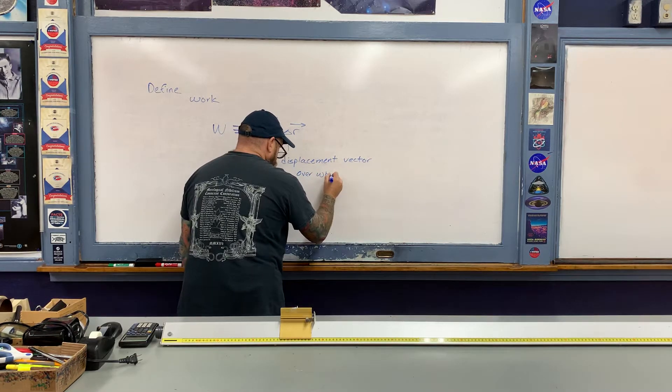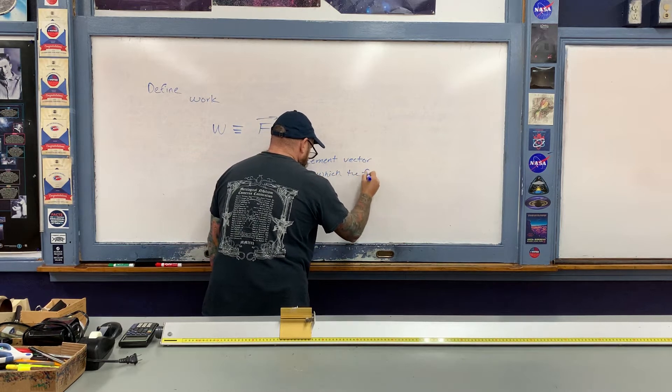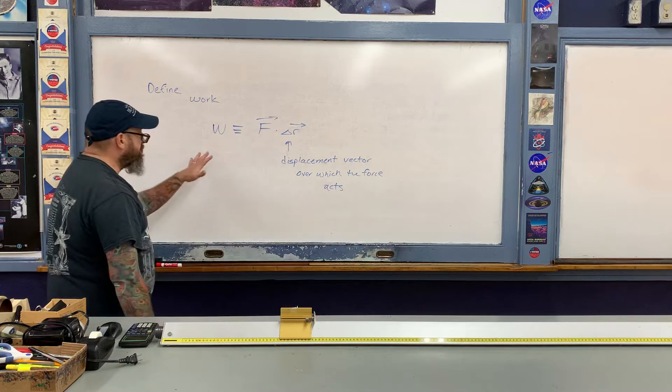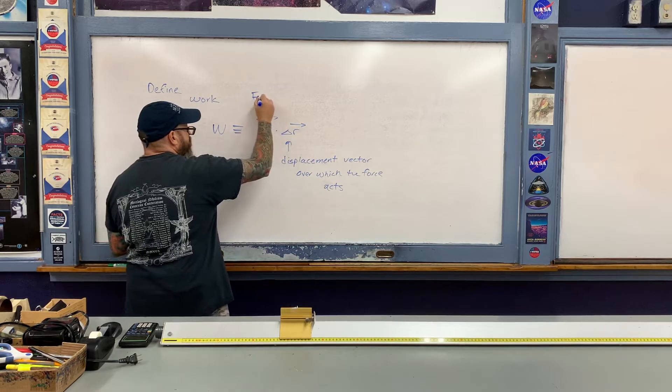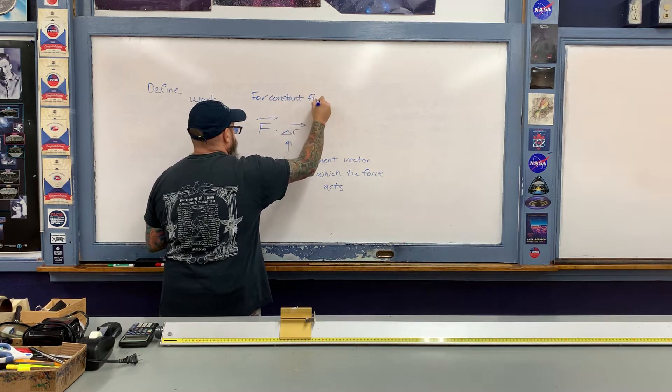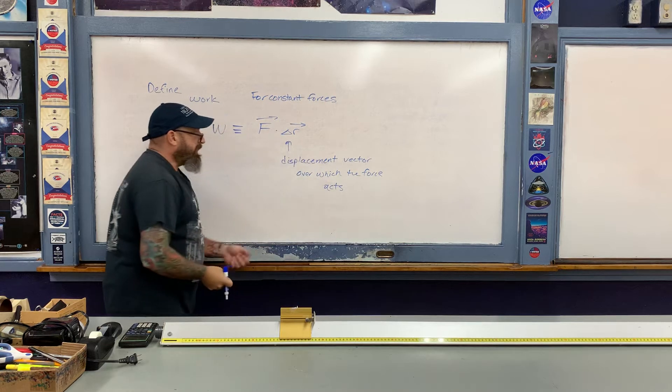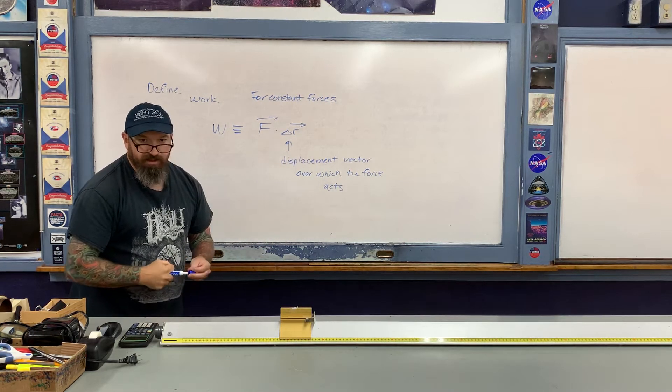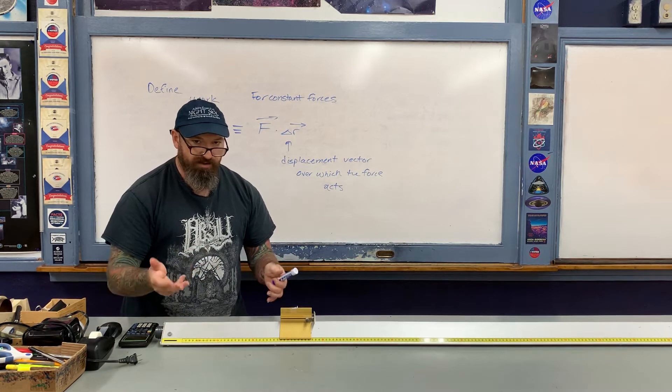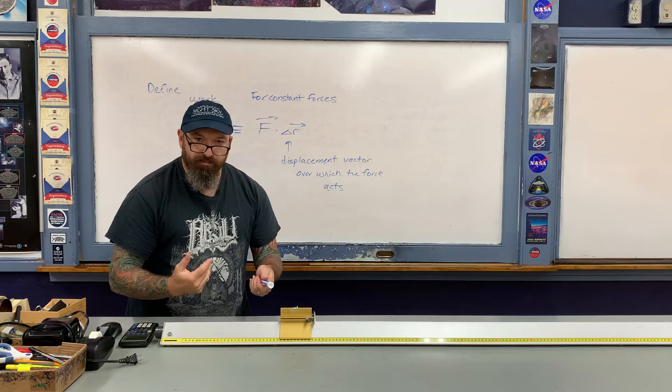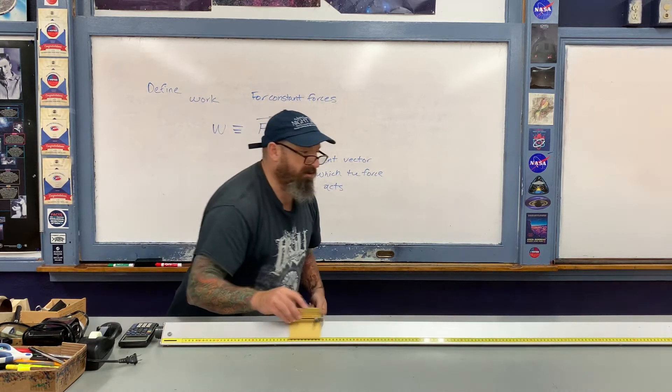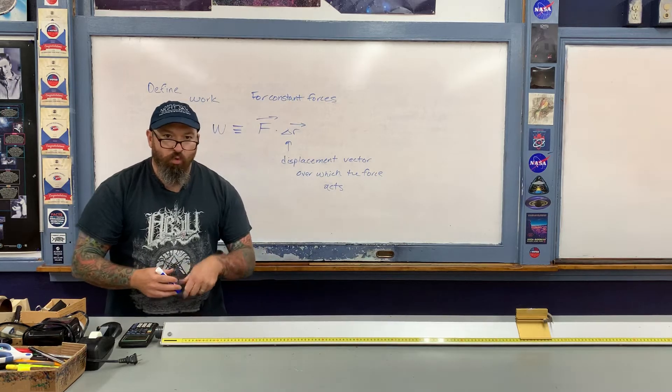This is the displacement vector over which the force acts. Once again, this is the definition of work for constant forces. Now let me explain what is meant by the displacement vector. I'm going to use my air track to do so. Let's say I apply a constant force to the cart over some displacement delta r.